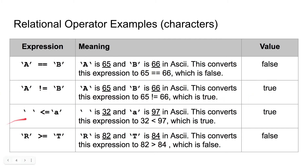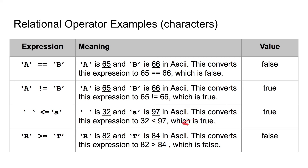We then have the space character is less than or equal to the lowercase a character. The space character is 32 and the lowercase a character is 97. So this converts the expression to 32 is less than or equal to 97, which is true. So this is a true expression.